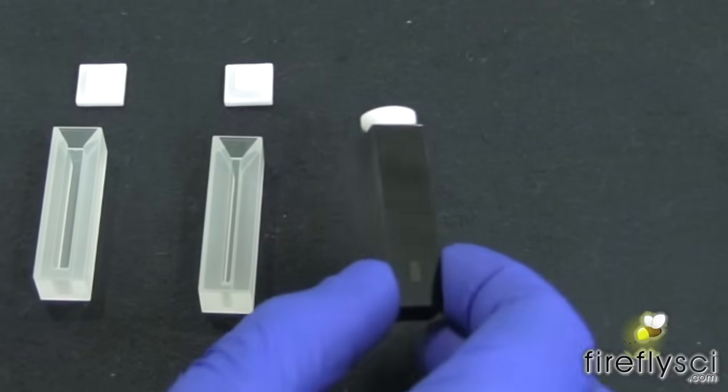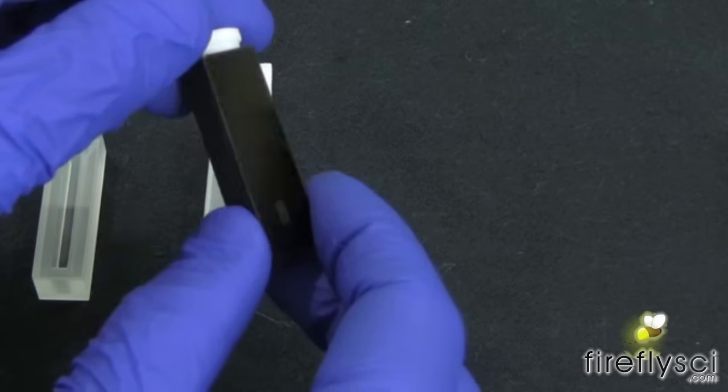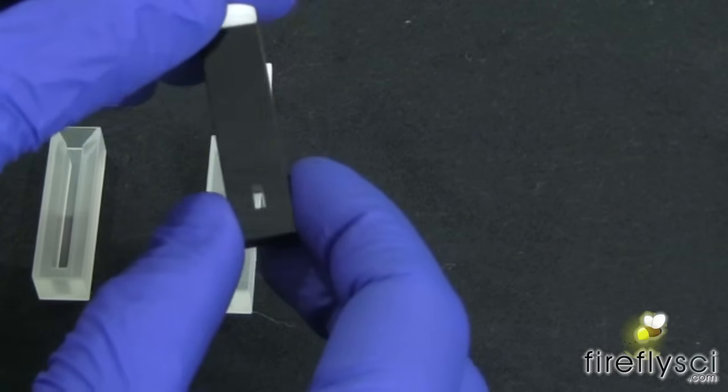And here we have our sub micro cuvette type 701. These range in capacities from 10 milliliters up to 160 milliliters.